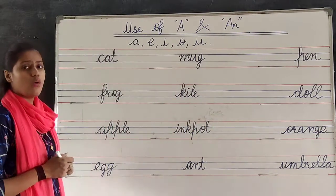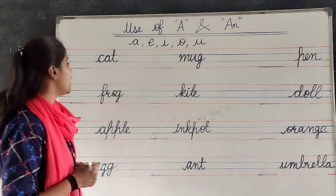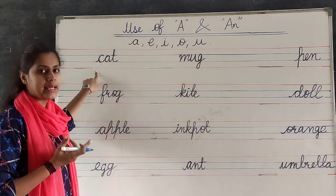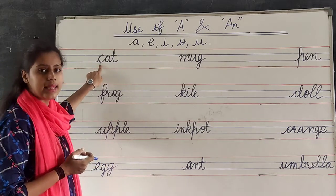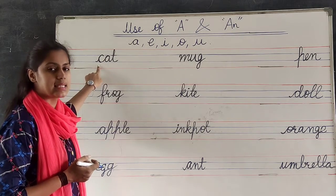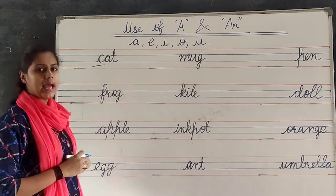here. What is it? C, A, T, cat. Right? So, we have to do first letter. What is it? C. C for cat. Is this a vowel? A, E, I, O, U.